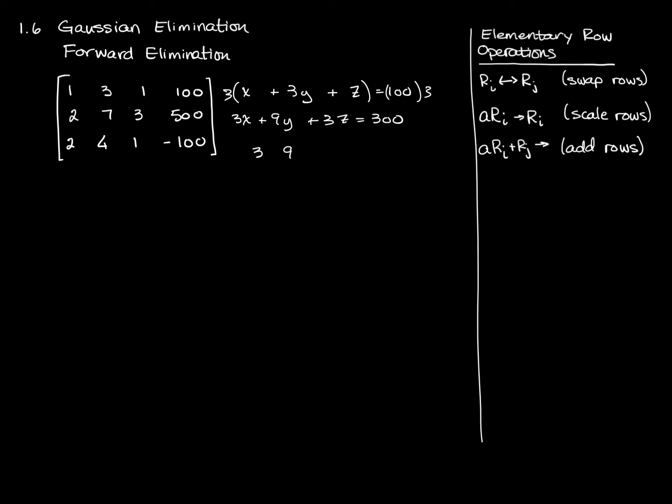And in matrix form, that would be 393, 300. So by scaling a row, all I'm doing is skipping the step where I have to worry about writing out the variables.